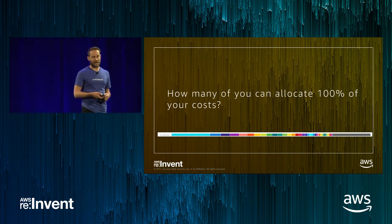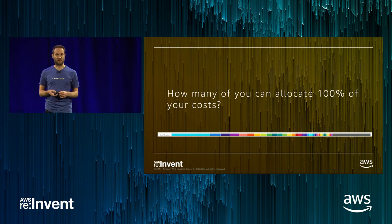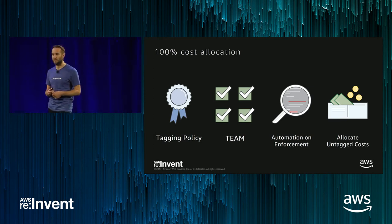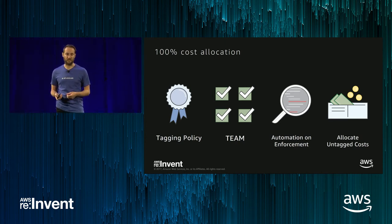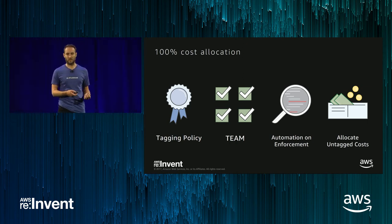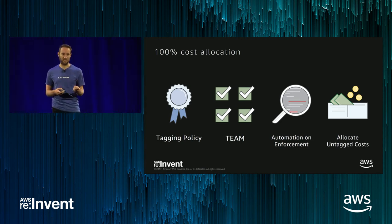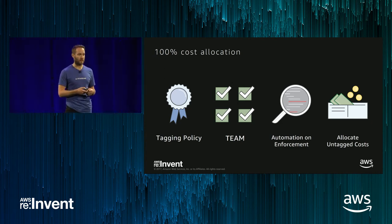How many of you can allocate every dollar on your bill to some business unit around your organization? The way we do it at Atlassian is through tagging. We have a good tagging policy distributed around the whole organization. We have buy-in from our teams who build tagging into their CI/CD deployments. Resources get tagged as soon as they're created. We then build enforcement — which would shut down or remove resources that don't have the correct tagging according to our policy. There will always be some costs that fall through the gaps, so we have a process to allocate those costs out to a particular business unit. This means every dollar on our invoice is owned by some business unit that is responsible for that cost.